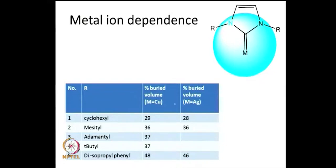Representative examples of buried volume percentages are shown for copper and silver complexes. The actual buried volumes measured from crystal structures do differ slightly from metal to metal. Nevertheless, the accepted buried volume percentage uses a fixed distance of 2 Å and an imaginary sphere of 3.5 Å for consistency, and tables are available for copper and silver showing slight differences between the two metals.